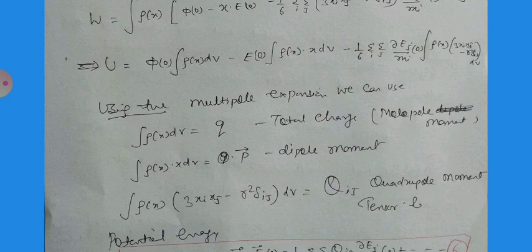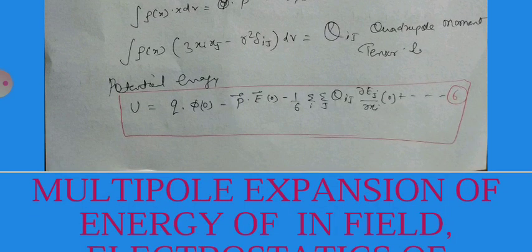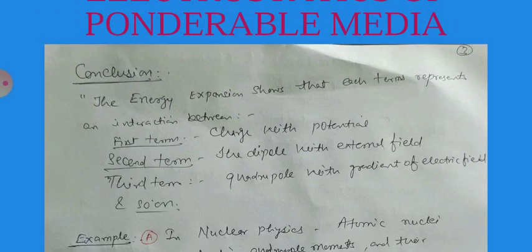The electrostatic energy of the multipole expansion is: the first term involves the total charge q = ∫ρ(x)dv; the second term involves the dipole moment p = ∫ρ(x)x dv; the third term involves the quadrupole moment Qᵢⱼ = ∫ρ(x)(3xᵢxⱼ - r²δᵢⱼ)dv. So the potential energy is: U = qφ₀ - p·E - (1/6)Σᵢ Σⱼ Qᵢⱼ(∂Eⱼ/∂xᵢ)|₀ + ...